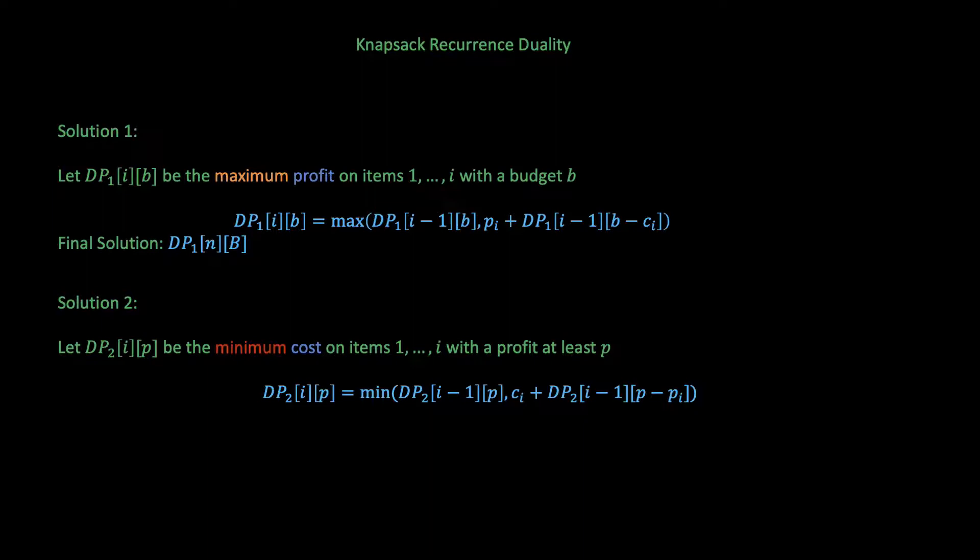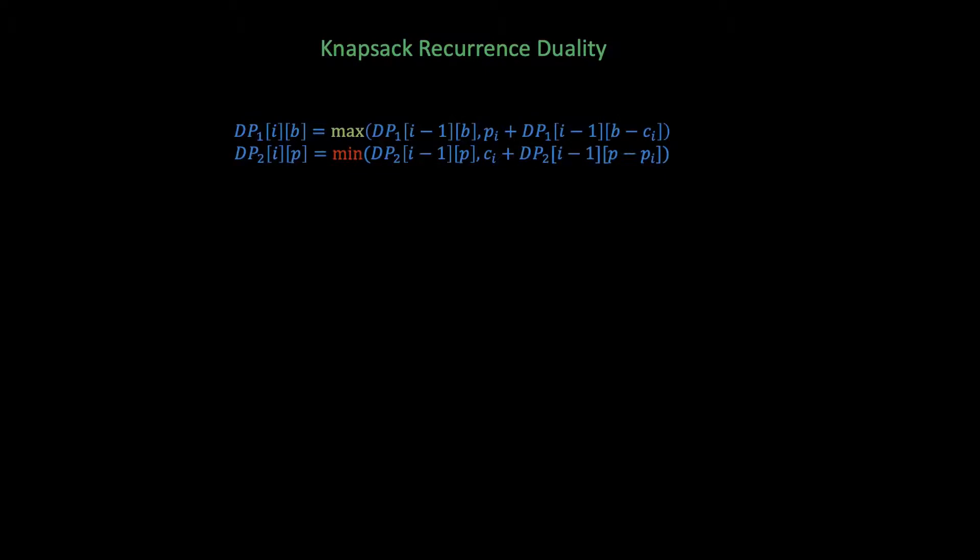The final solution would be the maximum profit P such that the cost DP2[N][P] is at most B. The maximum profit we can get from items 1 to I such that the total cost is at most our allowance B in this case. Now we're faced with two interesting recurrences. Both can be used to solve the knapsack problem and one is a minimization and the other is a maximization recurrence. This is an application of the recurrence duality technique.